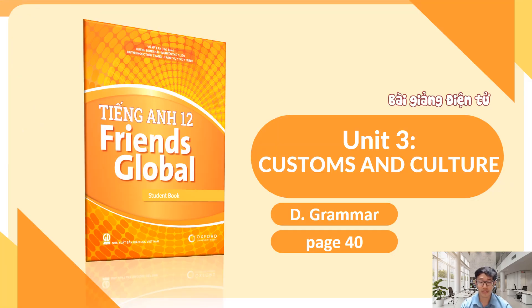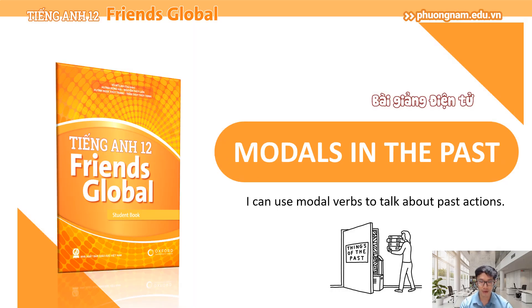Now please take out your book and open it to page 40 where we will have another section for grammar in unit 3, customs and culture. The grammatical point that we will learn today is about modals in the past. After this lesson you can use modal verbs to talk about past actions. Hôm nay chúng ta sẽ đến với một chủ điểm về ngữ pháp có tên là động từ khiếm khuyết ở thì quá khứ. Và sau bài học này các bạn có thể dùng động từ khiếm khuyết để nói về những cái hành động trong quá khứ.